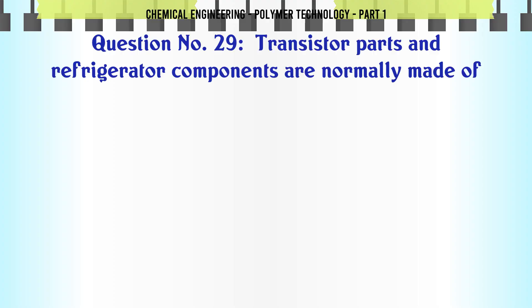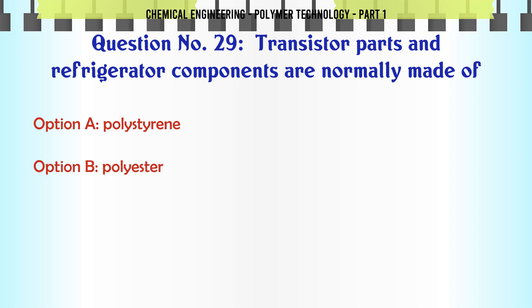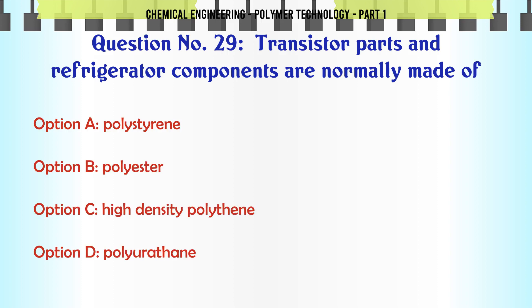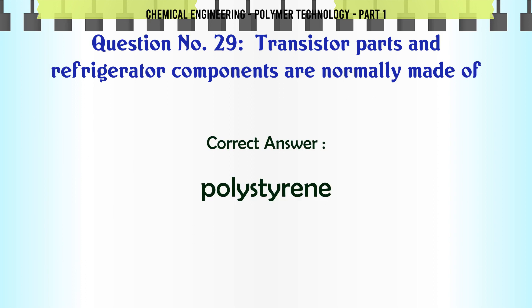Transistor parts and refrigerator components are normally made of: A. Polystyrene, B. Polyester, C. High-density polythene, D. Polyurethane. The correct answer is Polystyrene.